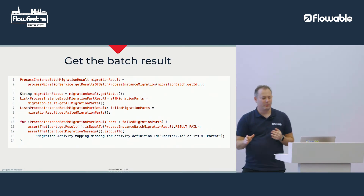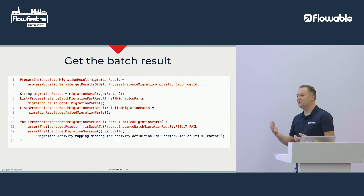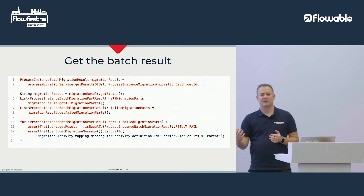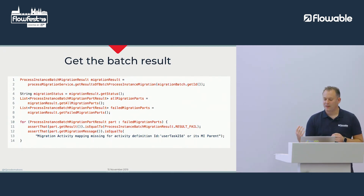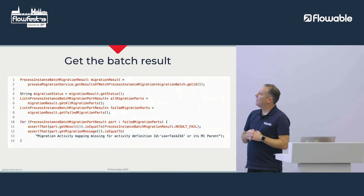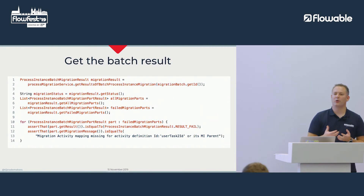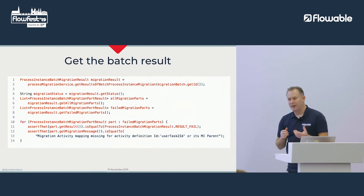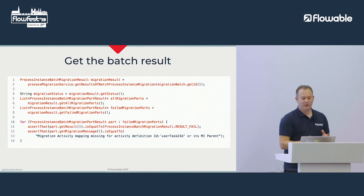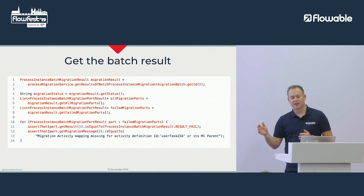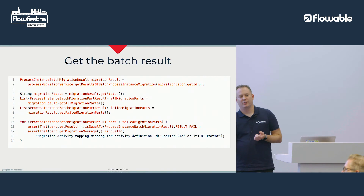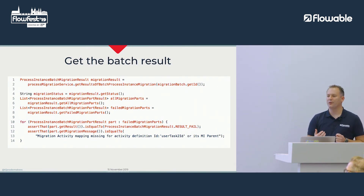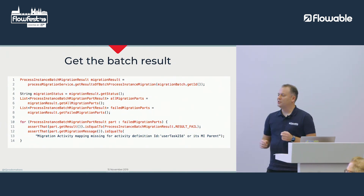After kicking off this batch, you can get the result via the process migration service. You get a status which could be completed, in progress, or whatever. From that migration result you can also get all migration parts — literally call get all migration parts to get everything: completed, failed, in progress, waiting. But you can also specifically ask for all the failed migration parts, or specifically waiting migration parts, completed, etc.